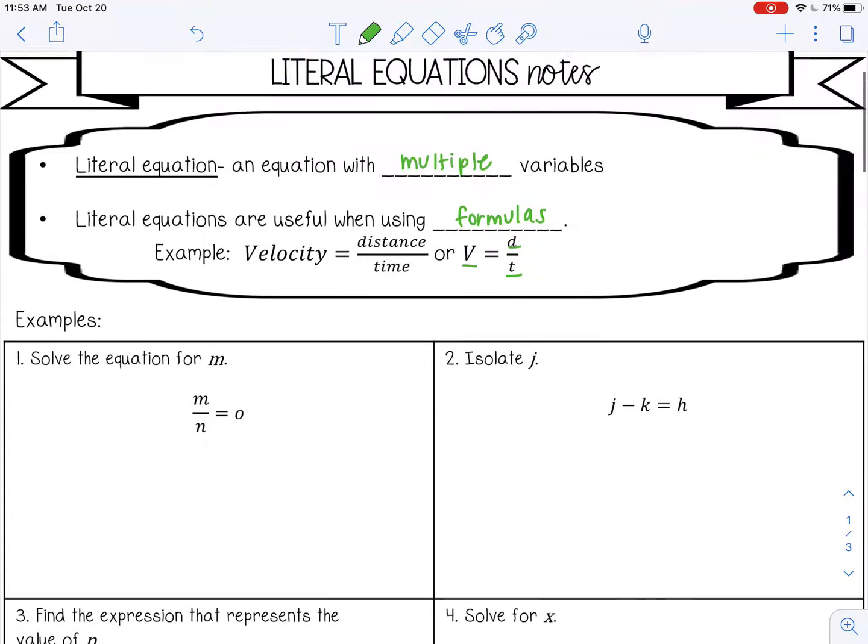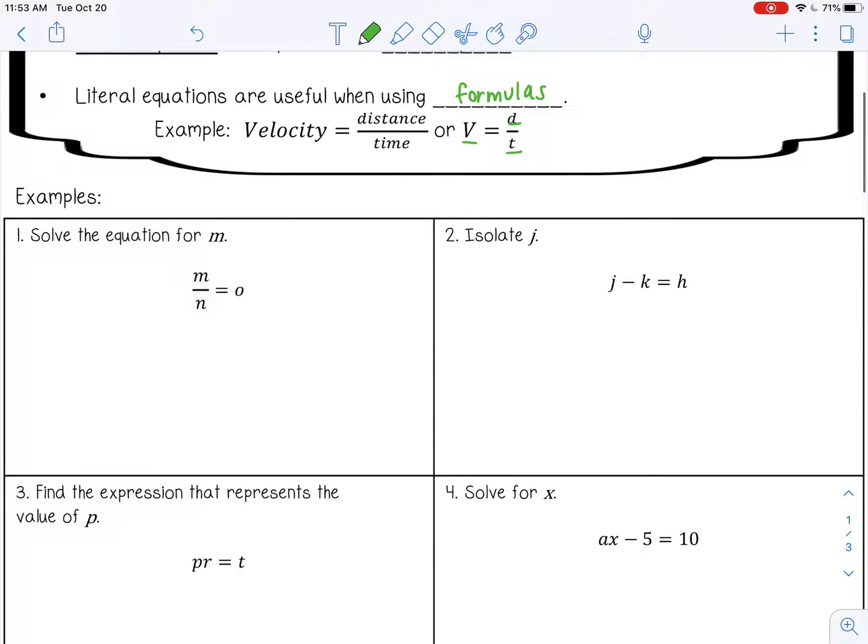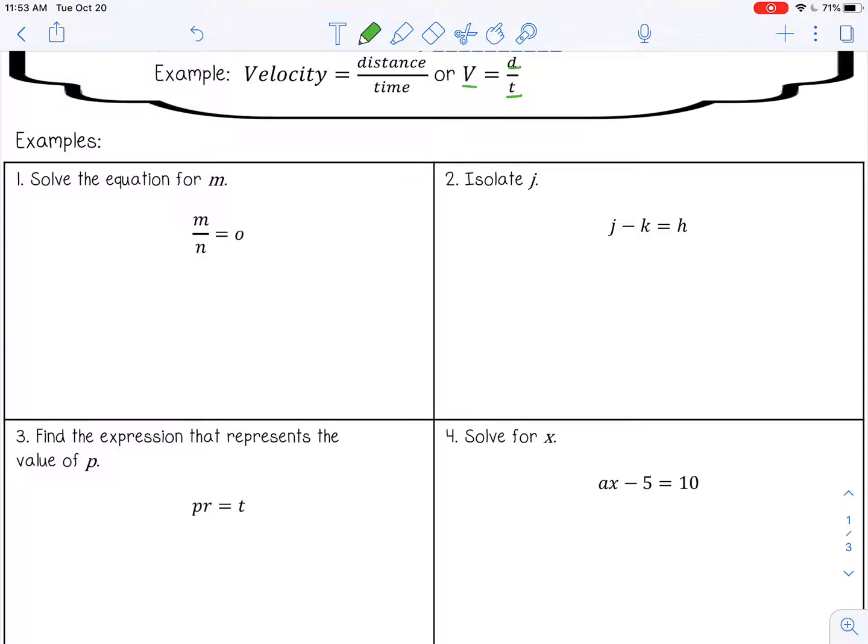Let's try some examples. In the first example, I want to solve the equation for m, so I want to get m by itself. Right now m is being divided by n, so I want to do the inverse and multiply by n. The same rules apply when you're using numbers as they do with variables. So o times n is on. That would be my final answer.